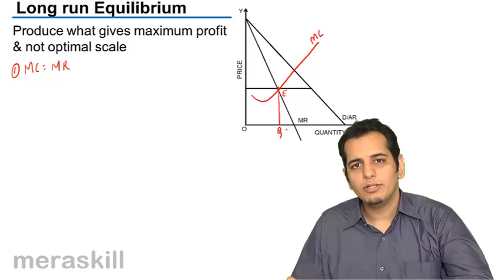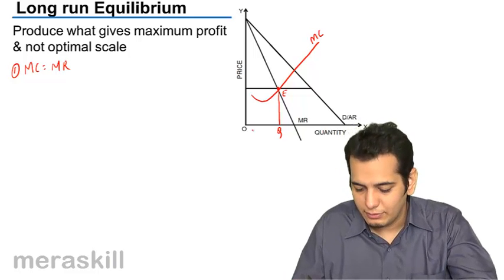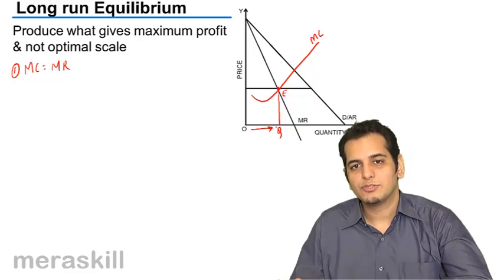OQ becomes my equilibrium quantity. This is how much I must be producing.